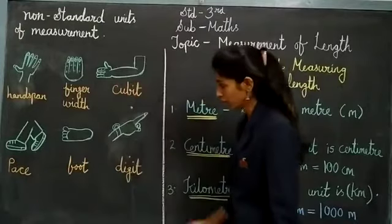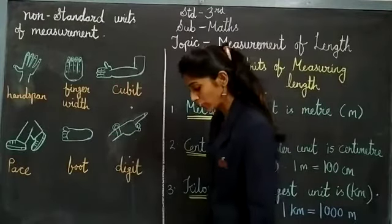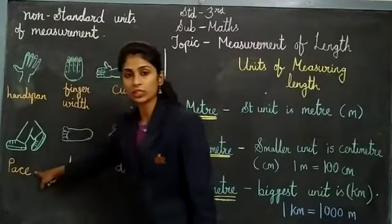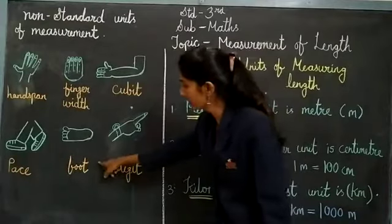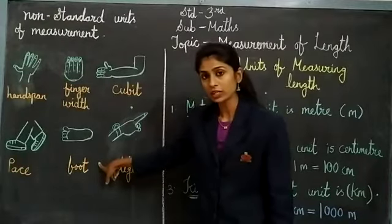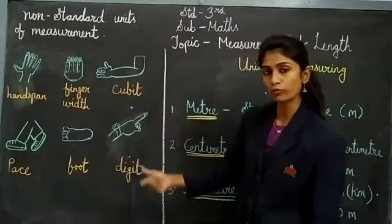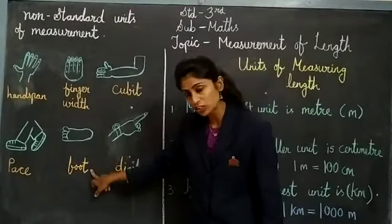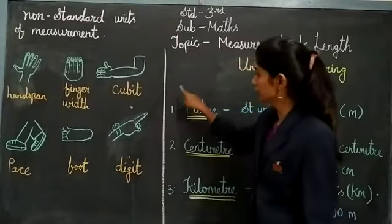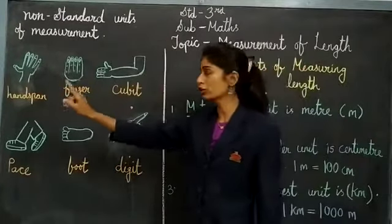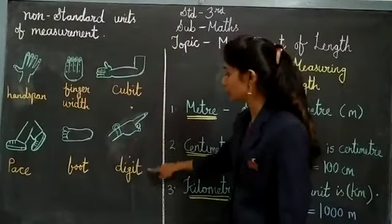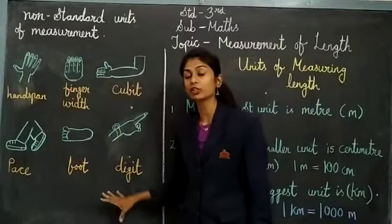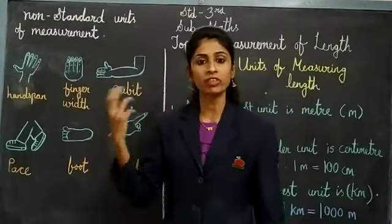Then next is pace. When we take measurement with the use of our legs — 1, 2, 3, 4 — this measurement is called pace. Then next is foot. When I am keeping my leg or foot on some object to measure the length, I will call it foot measurement. Then the digit — I use my pointed finger to measure something, that is called digit. So these are some of the measurements that we use with the help of our body parts.